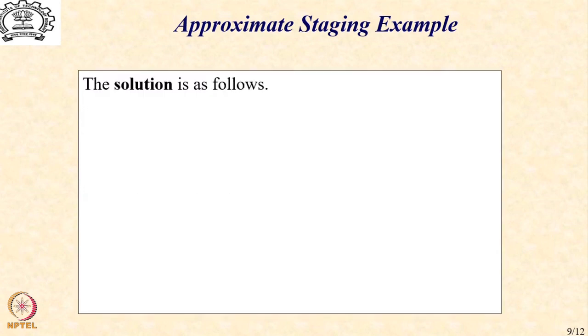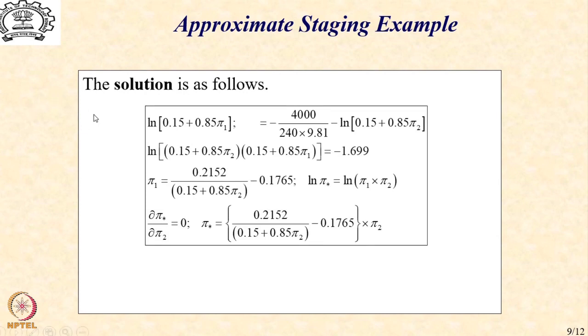So, the solution is as follows. We first express pi 1 in terms of pi 2 because that is the only other unknown. So, I can solve for pi 1 from this. The following is the expression for pi 1 that is 0.2152 divided by 0.15 plus 0.85 pi 2 minus 0.1765 that is the solution of pi 1 in terms of pi 2. My ln pi star is ln of pi 1 into pi 2. So, this ln pi star is function of only pi 2.